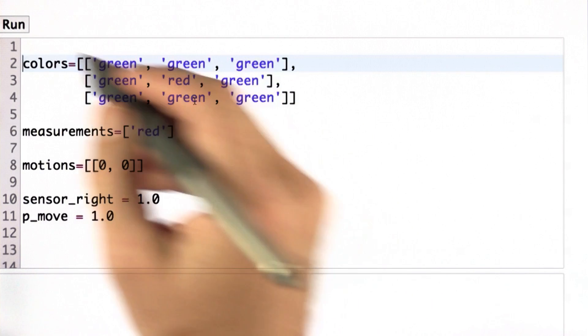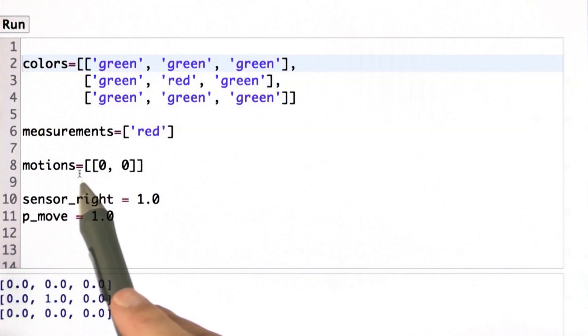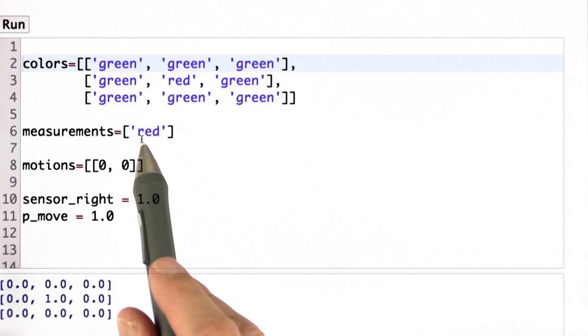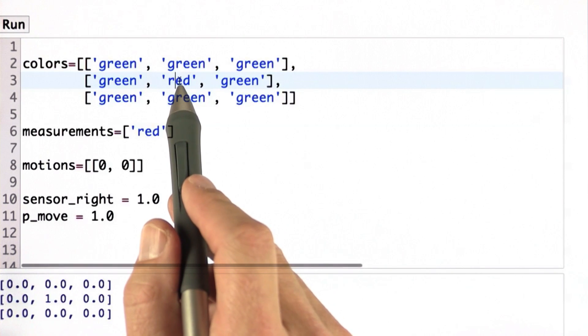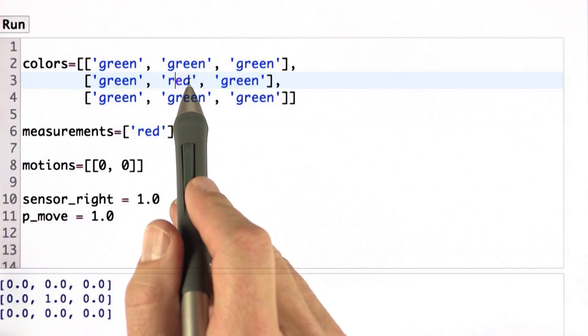So let's just execute this. Here, we didn't move. We observed red and we had a noise-free sensor. And as a result, we get a matrix that said 0 everywhere except it's 1 at the center location that has a red color.